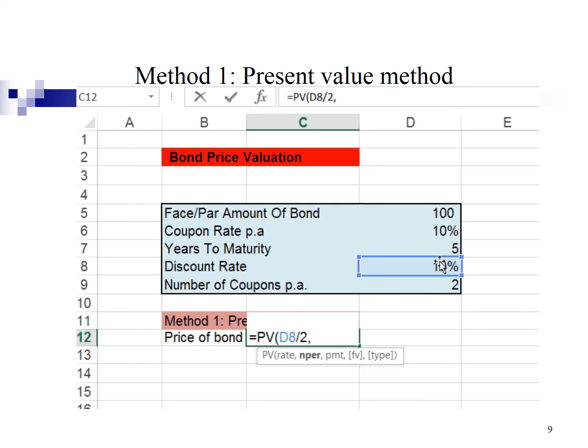NPER stands for number of period. I'm going to point 5 years, multiply with 2. Comma. PMT is the periodic payment. It refers to the semi-annual coupon interest. I'm going to point 100 par value, multiply with 10% divide by 2. Comma.